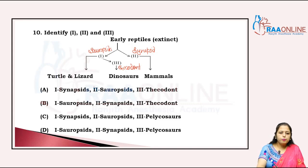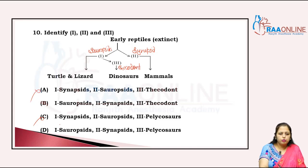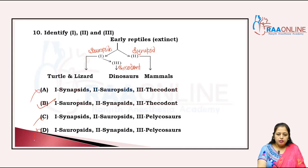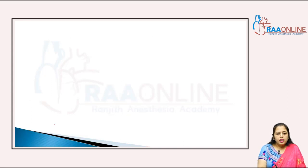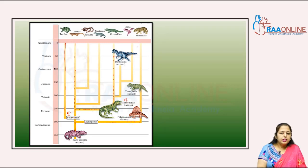The first is sauropsid — so that option is cancelled. Both B and D have the second as synapsid. The third is thecodont and pelycosaur. The B option is correct because we don't take pelycosaur since it gives rise to mammals afterward.